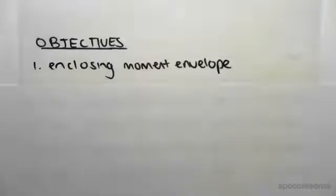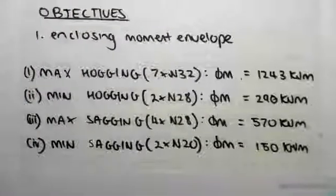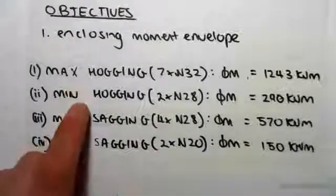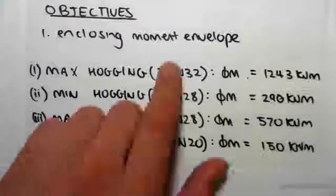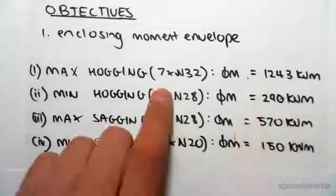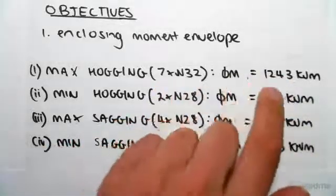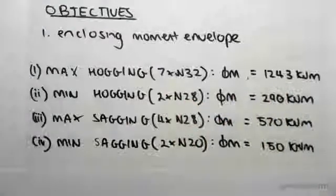The objective of this video is to enclose our moment envelope. We're now up to finding the length of all our different bars, and before we do that we need to look at our moment envelope and enclose it. I've provided a quick summary of each of the four cases: the maximum hogging, the minimum hogging, the maximum sagging, and the minimum sagging, along with the bar types found. For 7m32 bars we can handle 1243 kilonewton meters of moment.